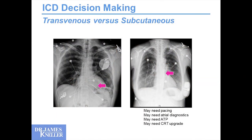But the decision process isn't over. If someone needs a single-chamber ICD, I also have to think: should this person be considered for a subcutaneous ICD? There you fret a lot, because you'll have no pacing of any kind if you ever find you need it. You may need atrial diagnostics — you don't have them. The ventricular diagnostics are primitive at best. The patient may need ATP and you can't offer it. And if they need a CRT device in the future, you're really hosed — starting from scratch in a patient already heavily instrumented. Nevertheless, this needs to be part of our thought process.